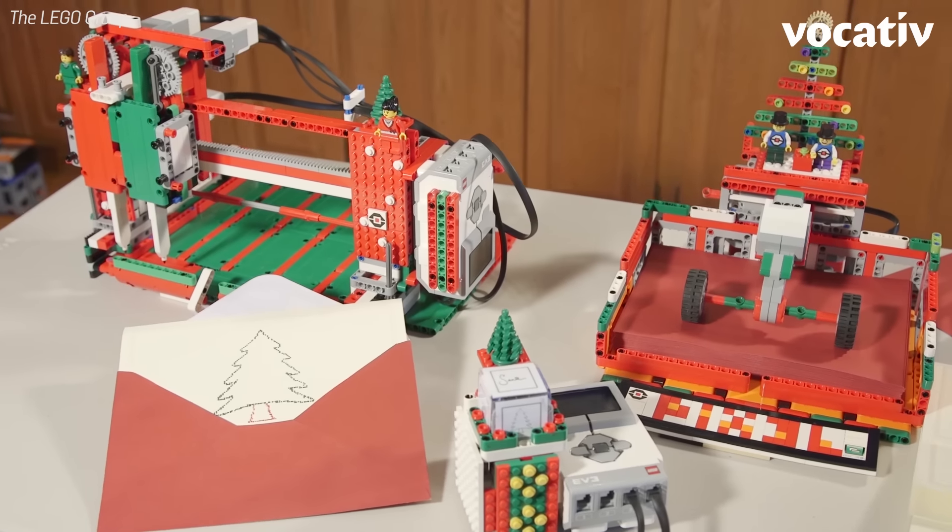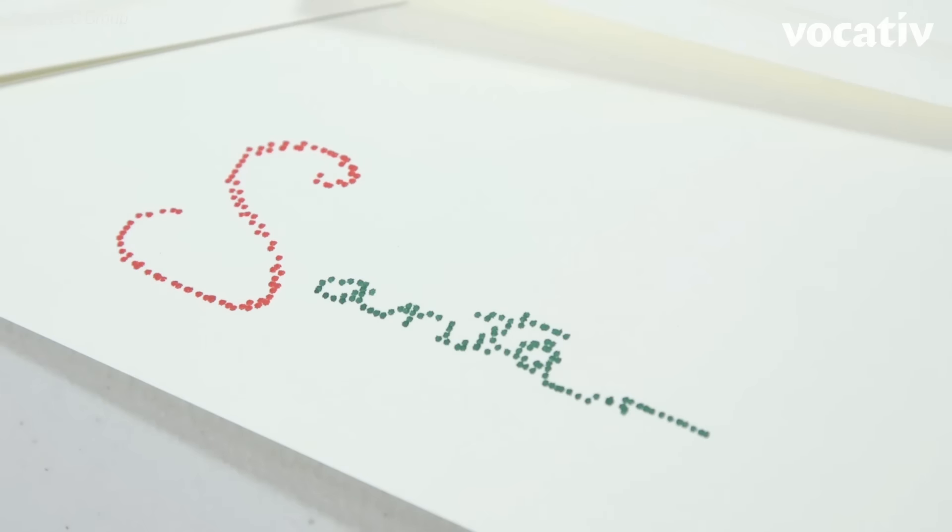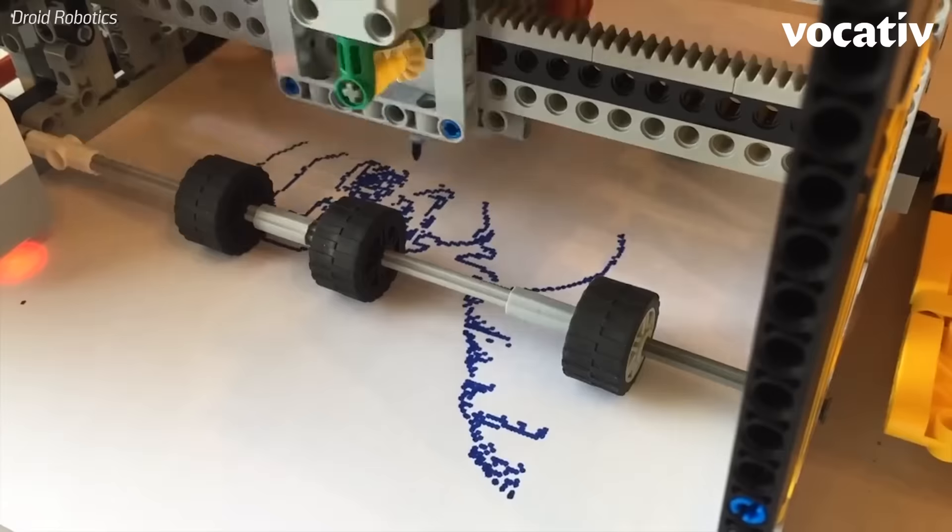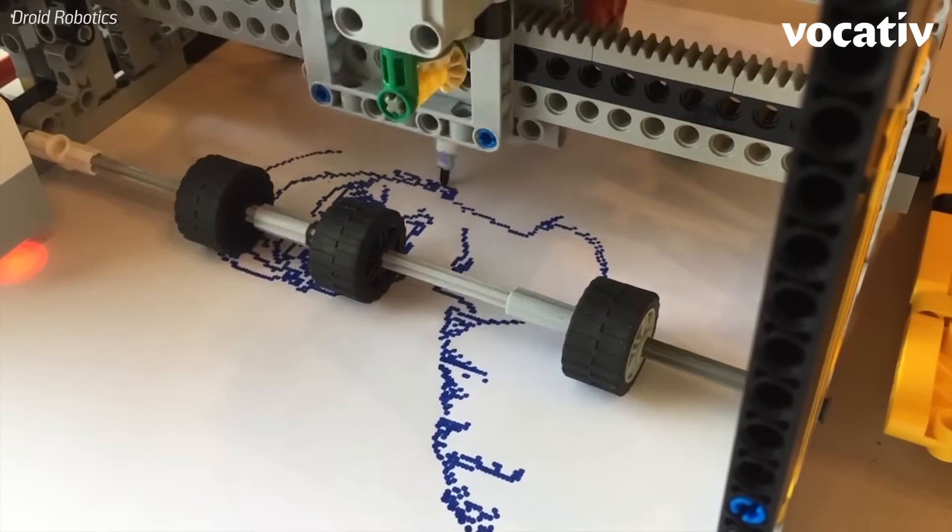So like the Christmas card one, that was meant for printing Christmas cards. The previous version was able to take pictures of people and print them out using the Raspberry Pi minicomputer and a camera.